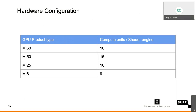In the GPU product line, you have MI6 and MI25 released in the 2017–2018 timeline, MI50 and MI60 released in the 2019 timeline, and MI100 and MI200 released in the 2020–2021 timeline. The number of compute units per shader engine varies, and that also has an impact on the performance it offers.